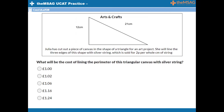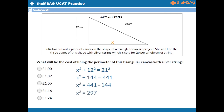We can apply Pythagoras directly to find the missing length. Let's call the missing length x. We know x squared plus 12 squared equals 21 squared. You can work out these squares to be 144 and 441. If x squared plus 144 equals 441, then x squared alone must equal 441 minus 144. To find the value of x, calculate the square root of this number, which gives you 17.23. Adding this length to the other side lengths gives 12 plus 21 plus 17.23, which equals 50.23 centimetres.